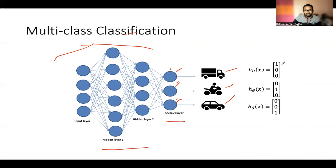For a truck, our hypothesis will look like this. For a bike, our hypothesis will look like this. And for a car, our hypothesis will look like this.